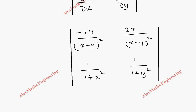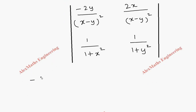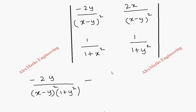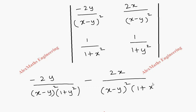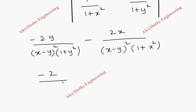Multiplying the leading diagonal: minus 2y by (x minus y)² into 1 by (1 plus y²), minus 2x by (x minus y)² into 1 by (1 plus x²). We can take minus 2 common from the numerator and (x minus y)² common from the denominator.